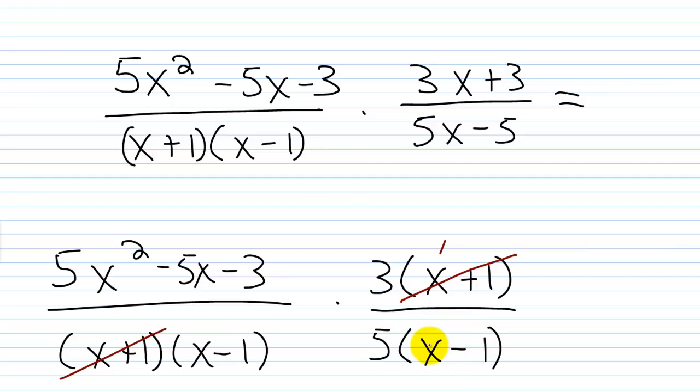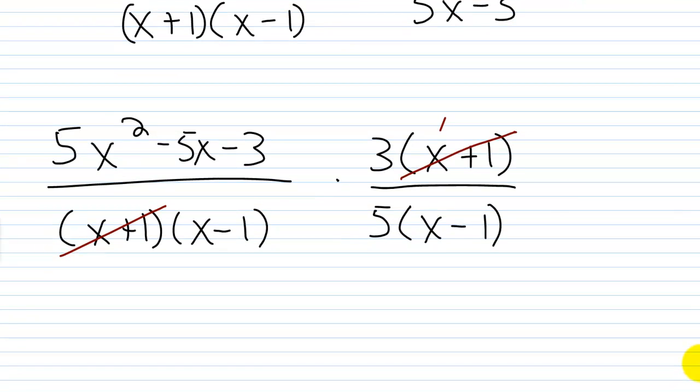But I can't really do anything between here and here. So basically as simple as I'm going to be able to make this is going to be this 3 multiplied by this polynomial here. So I'll do that.